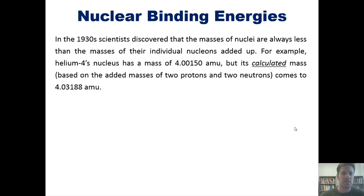In the 1930s, scientists discovered that the masses of nuclei are always less than the masses of their individual nucleons added up. For example, helium-4's nucleus has a mass of 4.00150 amu, but its calculated mass, based on the added masses of two protons and two neutrons, comes to 4.03188 amu.